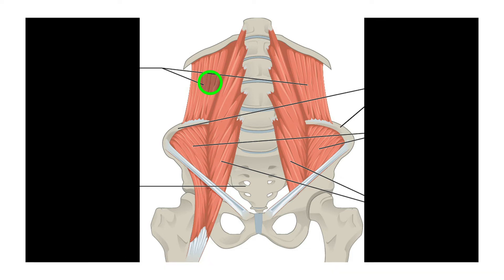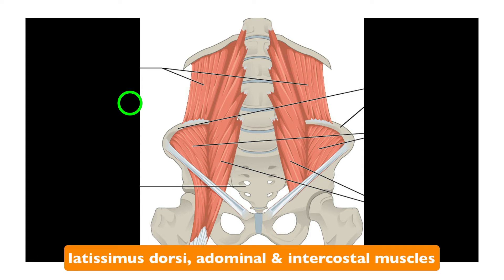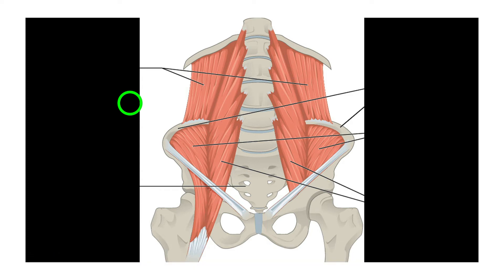In addition to the external intercostals and diaphragm, those accessory muscles aid deep aggressive inhalation. Exhalation is generally a passive process — no muscles are really needed, as the elastic fibers of the lungs allow them to recoil back to their original shape. During forced exhalation, the abdominal muscles, internal intercostal muscles, and the latissimus dorsi can be activated to expel air more forcefully.